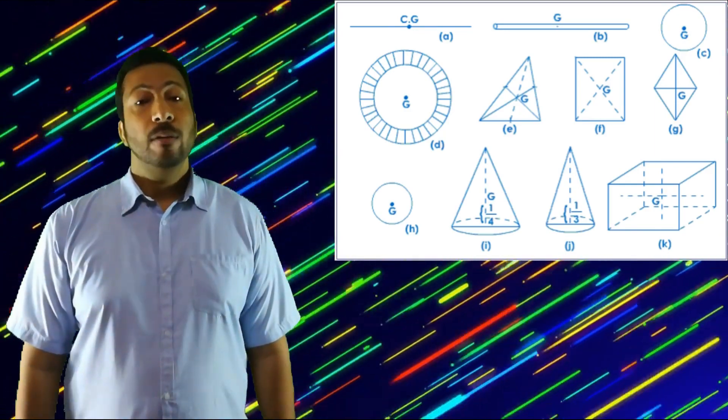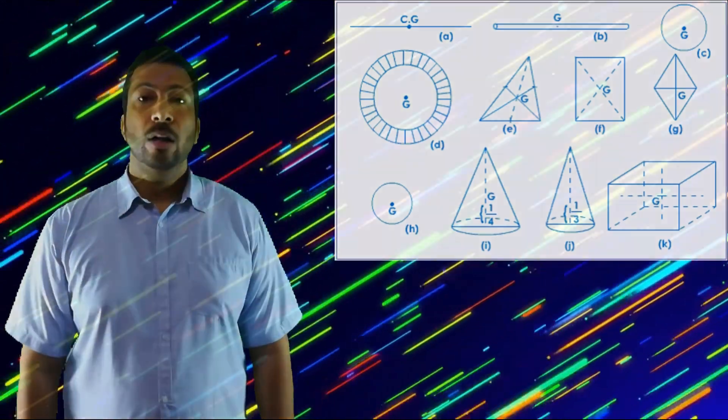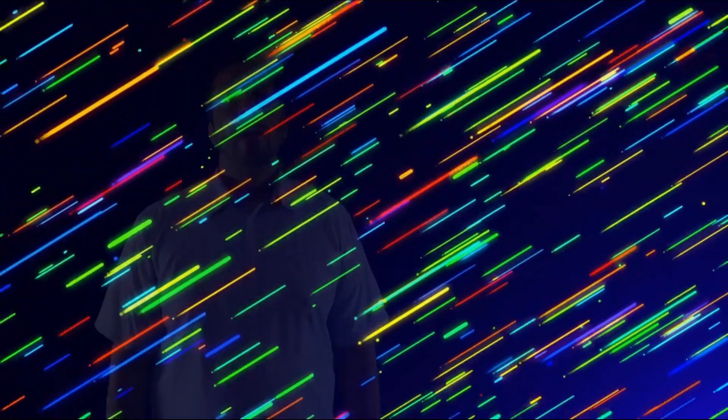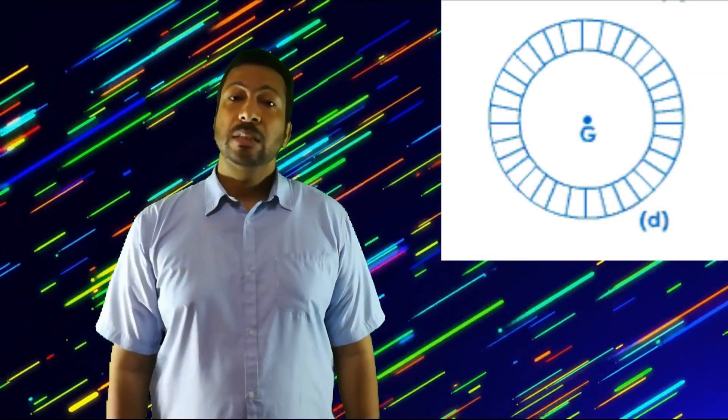It's a similar idea for 3D objects. Please note, as we see here with an annulus — also known as a ring — the center of gravity is not always inside of an object per se. With the ring, the center of gravity is in the middle but it's not physically inside the ring.